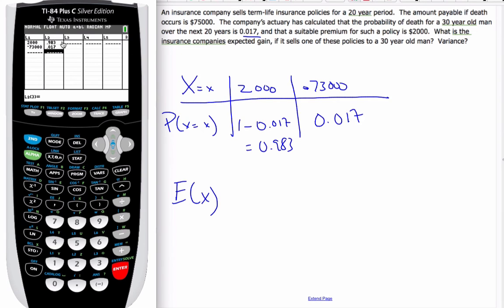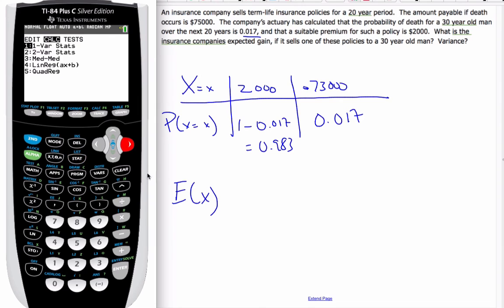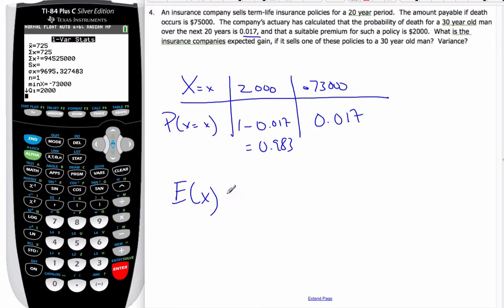So I've unfrozen my calculator and plug the values in and then I'm going to go stat calculate one variable statistical statistic frequency list is L2. My expectation is going to be $725.